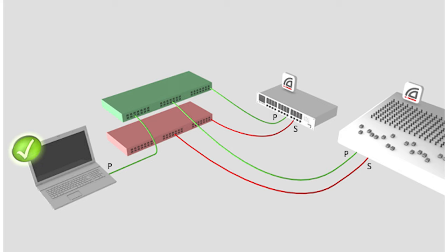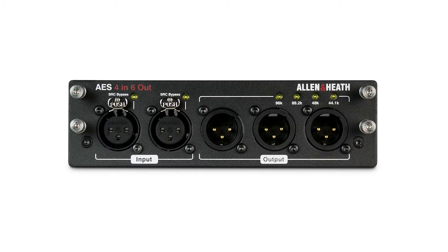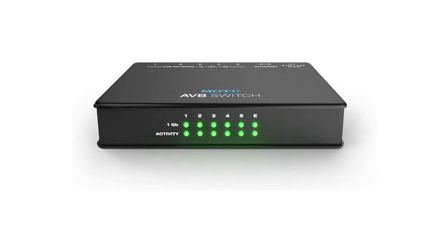In addition to analog and USB inputs and outputs, some mixers offer digital inputs and outputs. The most common digital protocols you'll find are Dante, AES3, MADI, and AVB. These protocols make it possible to send anywhere from a few dozen to hundreds of channels over a single cable, which can be extremely advantageous in live sound and in large integrated systems.